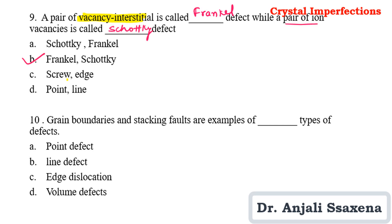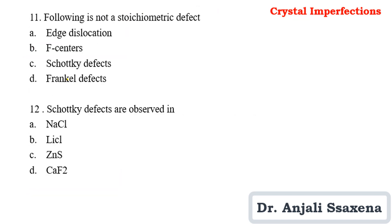Question 10: Grain boundaries and stacking faults are examples of which type of defect? Point defects are zero-dimensional, line defects are one-dimensional, edge dislocation is also one-dimensional. Grain boundaries and stacking faults are examples of volume defects, which are three-dimensional in nature. So grain boundaries and stacking faults are examples of volume defects.